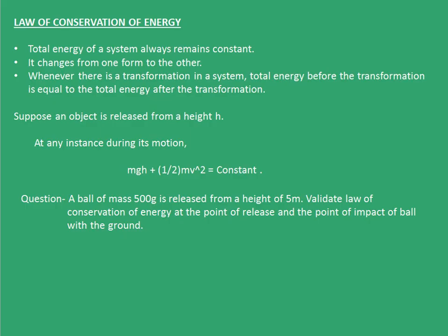Now, we see the law of conservation of energy. According to the law of conservation of energy, the total energy of a system always remains constant. It changes from one form to the other form. Whenever there is a transformation in a system, the total energy before the transformation is equal to the total energy after the transformation.